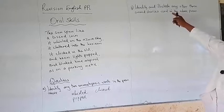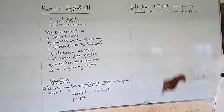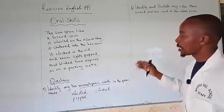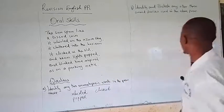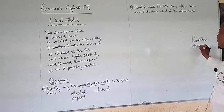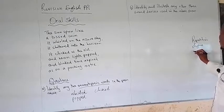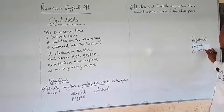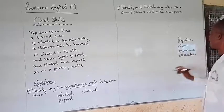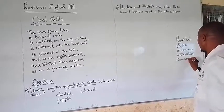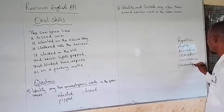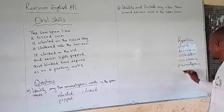I'm going to the second question. They are wanting us to identify and illustrate any other three sound devices used in the poem. So talking about sound devices, sound devices could be, for example, repetition, rhyme, assonance, alliteration, consonance. We shouldn't forget about onomatopoeia, and of course idiophone.